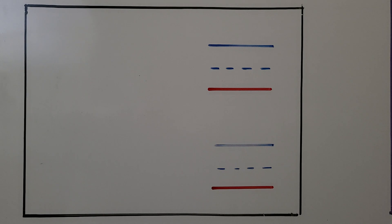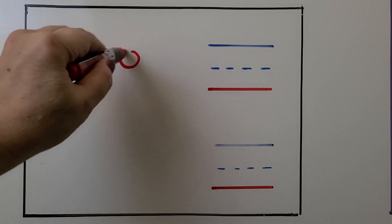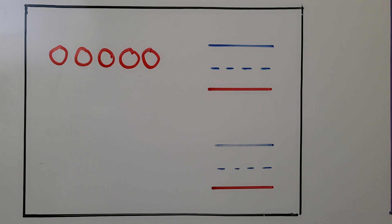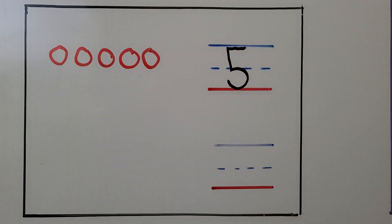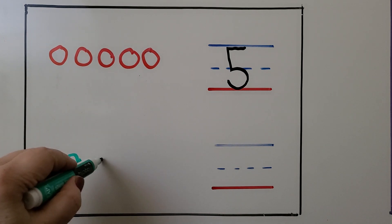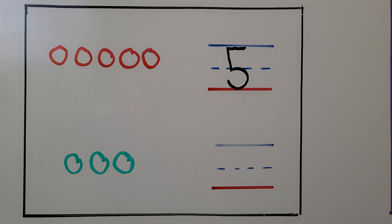Now listen to this problem carefully. There are eight apples. Five apples are red. The rest are green. How many are green? We can solve this with a quick picture. There are eight apples and five are red, so we make five red circles. The rest are green — we have five red, and we need more to make eight: five, six, seven, eight. We needed three more circles to make eight. Each circle is an apple, so there must be three green apples.